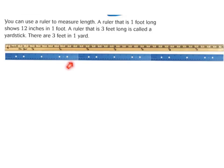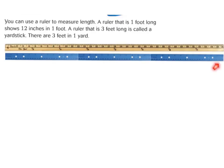Each ruler measures 12 inches, and 12 inches is equal to 1 foot. So a ruler has 12 inches in it and it's equal to 1 foot. So if we had 12 plus 12 plus 12, that would be 1, 2, 3 feet, and that gives us 36 inches.